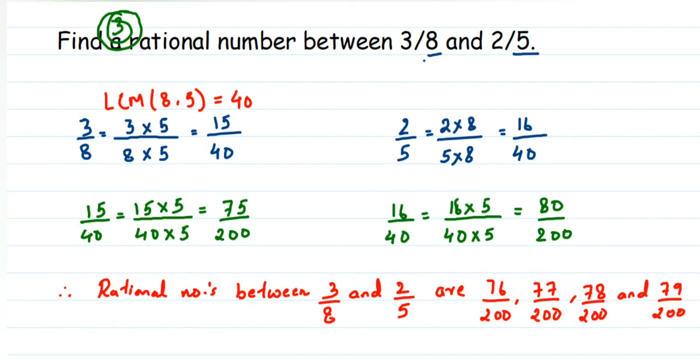I hope this question is clear — how to find rational numbers between two given numbers. If you have any other questions or doubts, you can drop a comment. Thank you so much for watching.